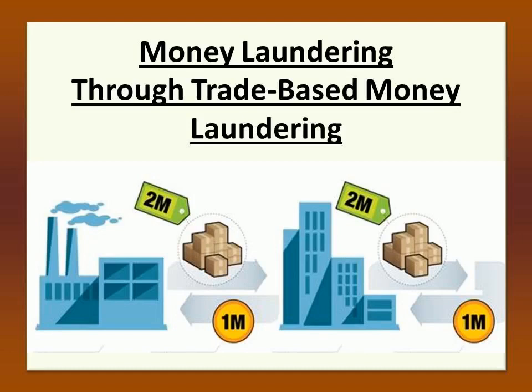Let us understand money laundering through trade-based money laundering, or TBML. Hundreds of billions of dollars are laundered annually by way of TBML. It is one of the most sophisticated methods of cleaning dirty money and also one of the most difficult to detect. By definition, TBML is the process by which criminals use legitimate trade to disguise their criminal proceeds from their unscrupulous sources. The crime involves a number of schemes to complicate documentation of legitimate trade transactions, including moving illicit goods, falsifying documents, misrepresenting financial transactions, and under- or over-invoicing the value of goods.